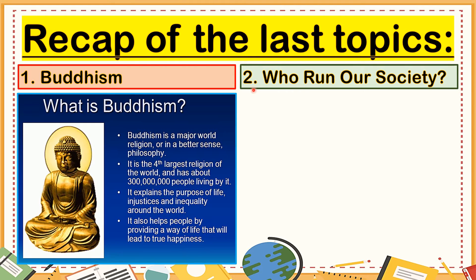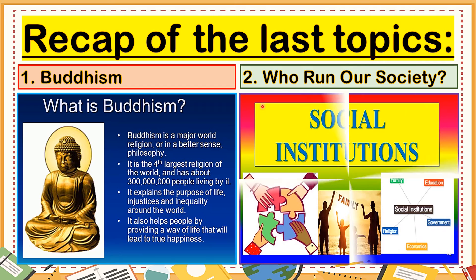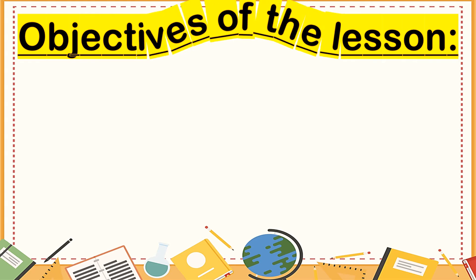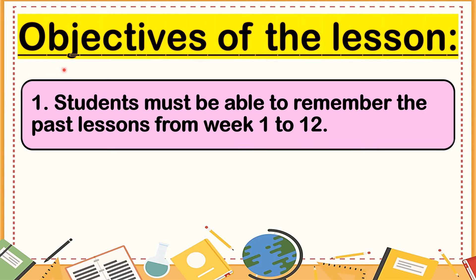Who runs our society? In this topic we discussed the five social institutions one by one, which are family, education, government, economics, and religion. The first objective of the lesson is that students must be able to remember the past lessons from week 1 to week 12 for the preparation of your midterm assessment. These topics are Units 1, 2, and 3.